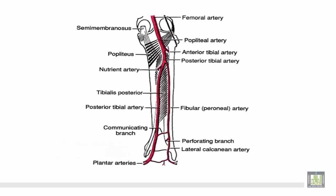This is the popliteal artery in the popliteal fossa, which is a continuation of the femoral artery and divides into two terminals at the lower border of the popliteus muscle.